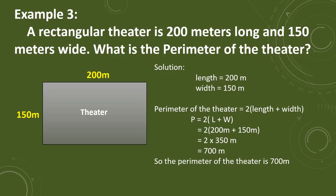Let's come now to the third example. It is a word problem. A rectangular theater is 200 meters long and 150 meters wide. What is the perimeter of the theater? Given the length of 200 meters and width of 150 meters, we use the formula and substitute the values. 200 meters plus 150 meters equals 350 meters, and 2 times 350 meters equals 700 meters. Therefore, the perimeter of the theater is 700 meters.